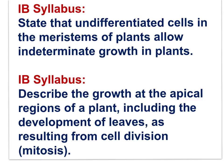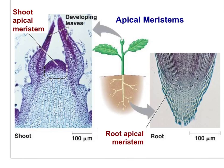Here are two IB syllabus statements: State that undifferentiated cells in the meristems of plants allow indeterminate growth in plants; and describe the growth at apical regions of a plant, including the development of leaves, as resulting from cell division. As they develop, plants grow in two directions — toward the sun and toward the center of the earth. Plants retain undifferentiated tissue throughout their life that allows them to grow and grow. This is indeterminate growth. Growth at these apical regions includes the development of leaves, all resulting from mitotic cell division.